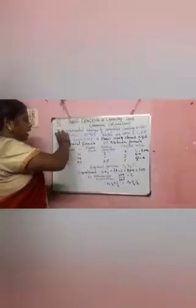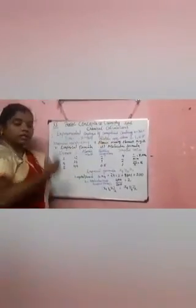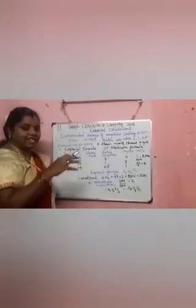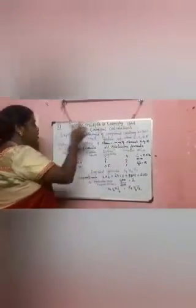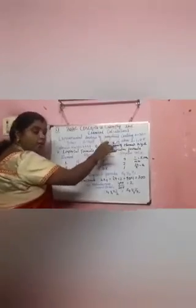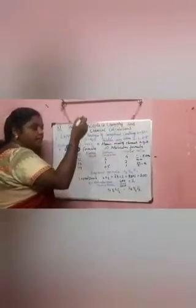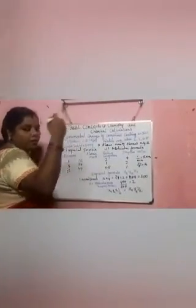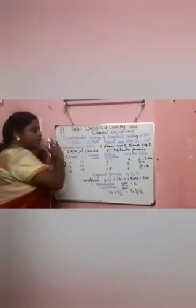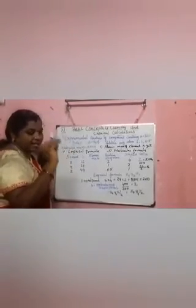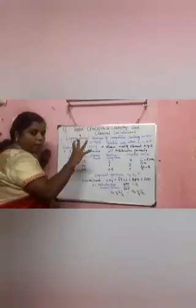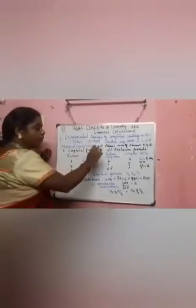The next problem involves experimental analysis of a compound containing elements X, Y, and Z — the specific element names are not given. The percentages are: X = 32%, Y = 24%, Z = 44%. The relative number of atoms is also given: X = 2, Y = 1, Z = 0.5. The molecular mass of the compound is 400 g. We need to find: (1) the atomic mass of each element, (2) the empirical formula, and (3) the molecular formula.